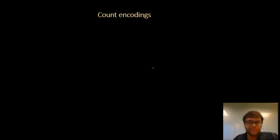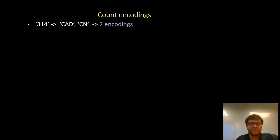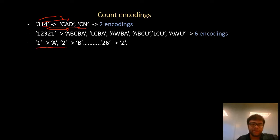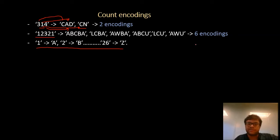Let's look at the Count Encodings problem today. Given an input string, we want to count the number of encodings we can do using this string. For example, we can do two encodings: 3 is mapped to C, 1 is mapped to A, and 4 is mapped to D giving CAD. Another encoding could be C and 14 mapped to N. This is done using a mapping of 26 alphabets where every digit represents an alphabet. Another example is 12321 where we have six encodings. Given a digit string, we want to compute the number of encodings for that digit string.